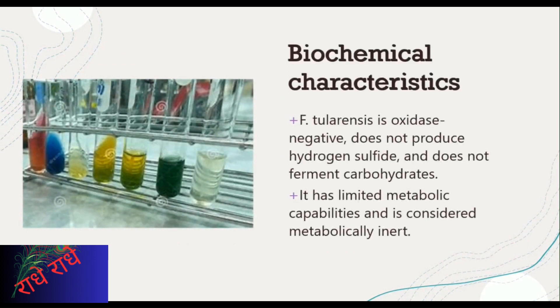F. tularensis is a bacterium that causes tularemia, a potentially fatal disease. Its biochemical attributes make it hard to detect and treat since it is oxidase-negative, does not produce hydrogen sulfide and does not ferment carbohydrates, which decreases its metabolic activity. Such metabolic inactivity must be taken into account when creating a drug to prevent or address this infection.